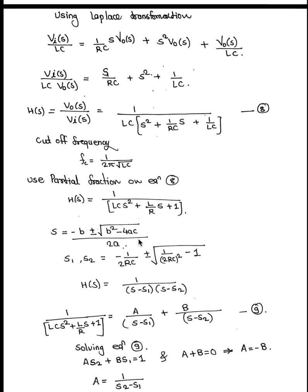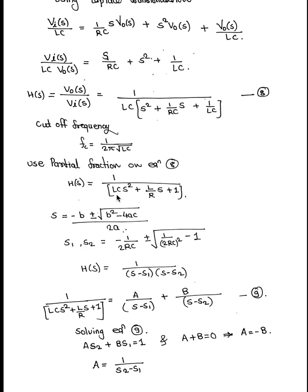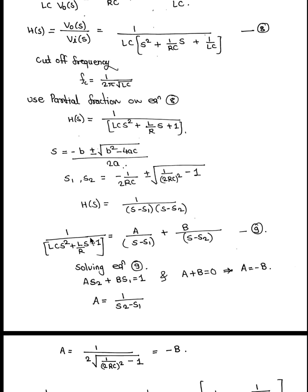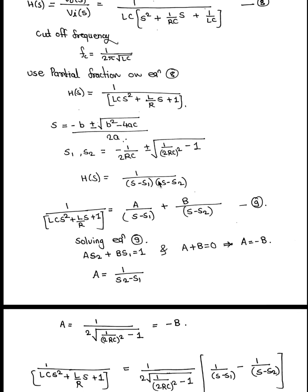Modifying our transfer function, we can see that the denominator of the transfer function is in the form of a quadratic equation. So we can find its roots. The roots of this quadratic equation are s1 and s2, and now we can apply the impulse response to our transfer function.